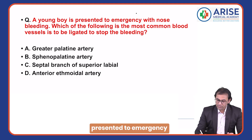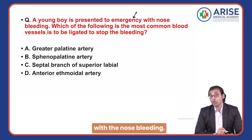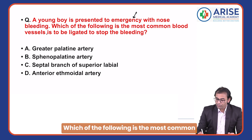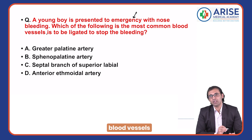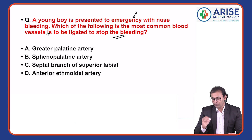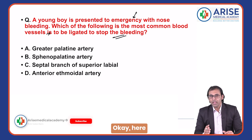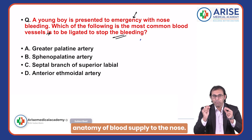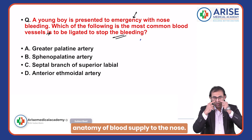A young boy is presented to emergency with nose bleeding. Which of the following is the most common blood vessel to be ligated to stop the bleeding? Here you should be knowing the basic anatomy of blood supply to the nose.